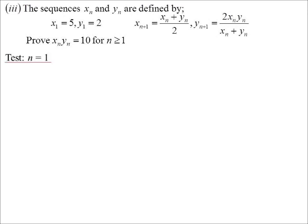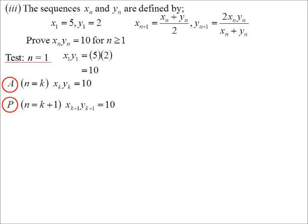So let's do it for, if we grab the first term in each one, term 1 times term 1 in the other one, 5 times 2, sure enough, that's 10. My assumption then will be that we'll work for if I get the kth term in the x series, the kth term in the y series, multiply them together, we'll get 10. We want to prove that if we get the k plus 1th term in each series, multiply them together, we'll get 10.